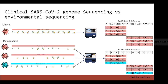We know how sequencing is performed for SARS-CoV-2: using pools of primers designed to tile across the genome. The amplicons generated from those PCR reactions are sent into the sequencer. The reads that come out are mapped to a reference genome, and you look for mutations in the reads relative to the reference. The collection of mutations is used to assign that genome sequence to a given lineage and for additional types of analysis.